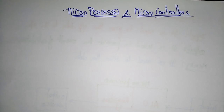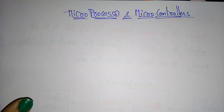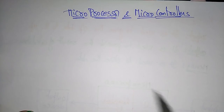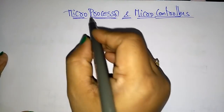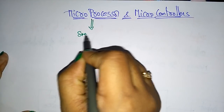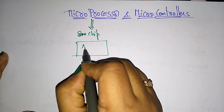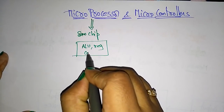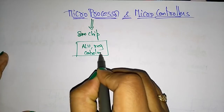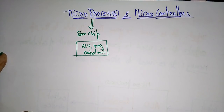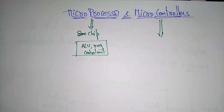Coming to the next topic: microprocessors and microcontrollers. In the previous videos I explained about the introduction and some different evaluations of the processor. Now let us see what a microprocessor and microcontroller are. A microprocessor is a single chip consisting of ALU, registers, and a control unit present in that single chip. Now coming to the microcontroller.